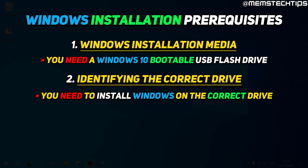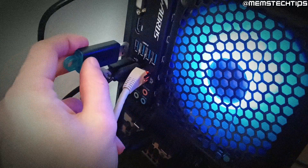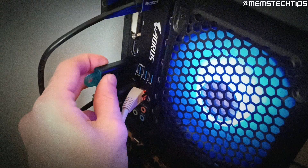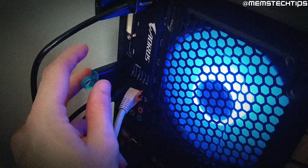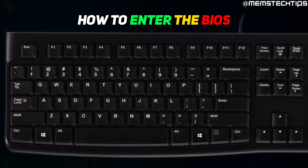Once you have a bootable USB flash drive with Windows on it and you're sure you can install it on the correct drive, it's time to boot from the USB. Shut down your computer if it isn't already powered off, then plug in the USB flash drive — preferably to a port directly on the motherboard. Start up your computer and immediately start hitting the Escape, Delete, or F2 keys on your keyboard repeatedly.